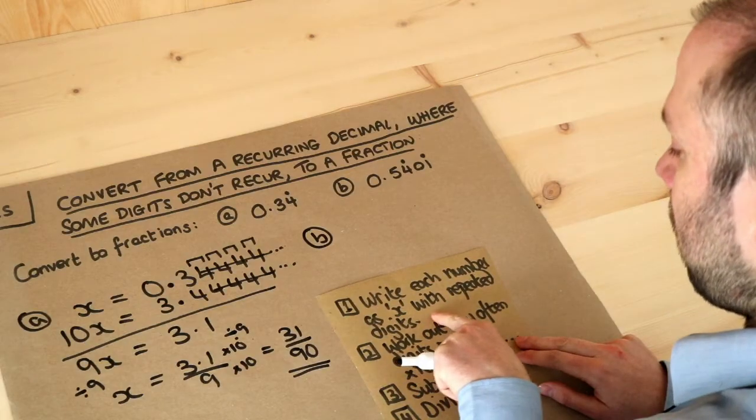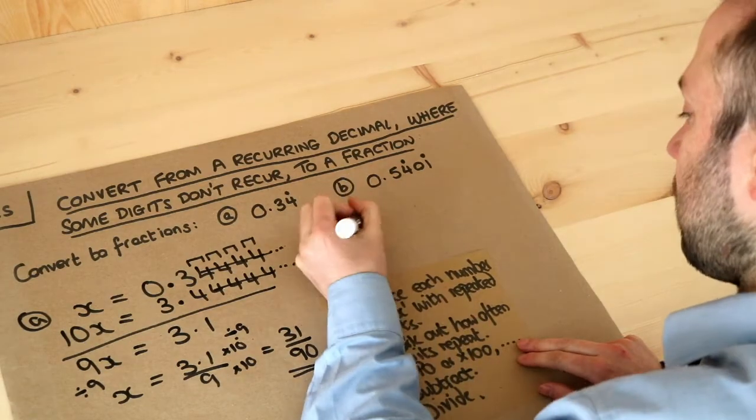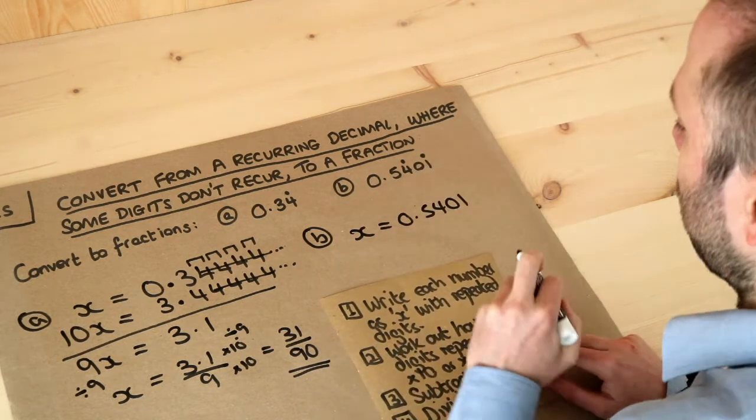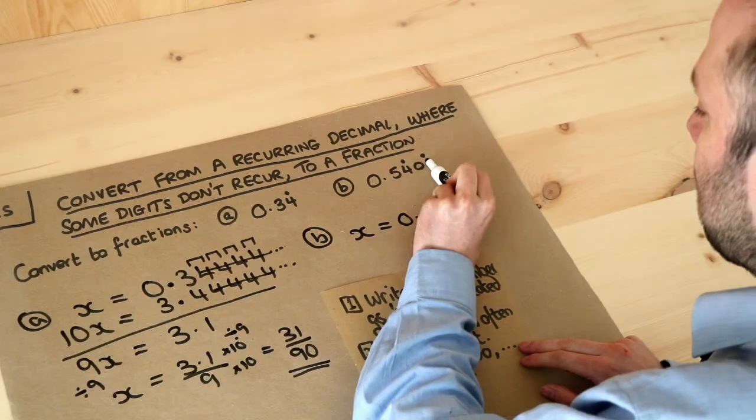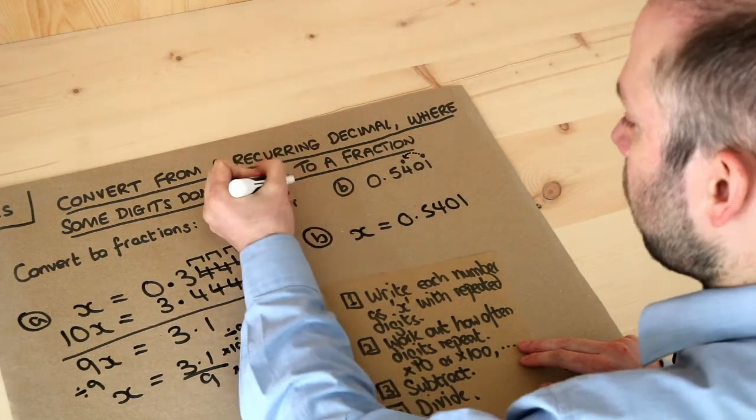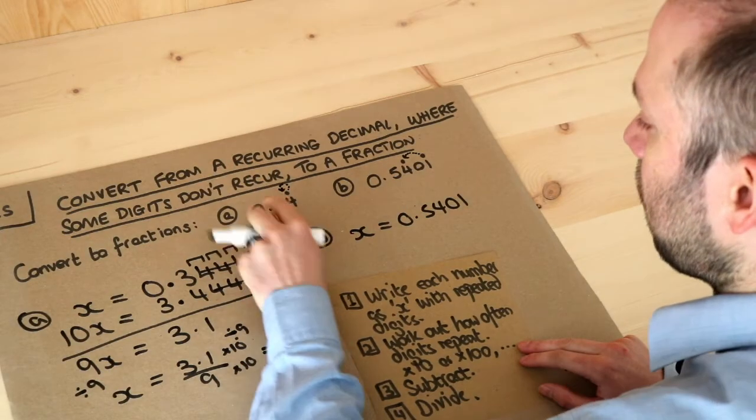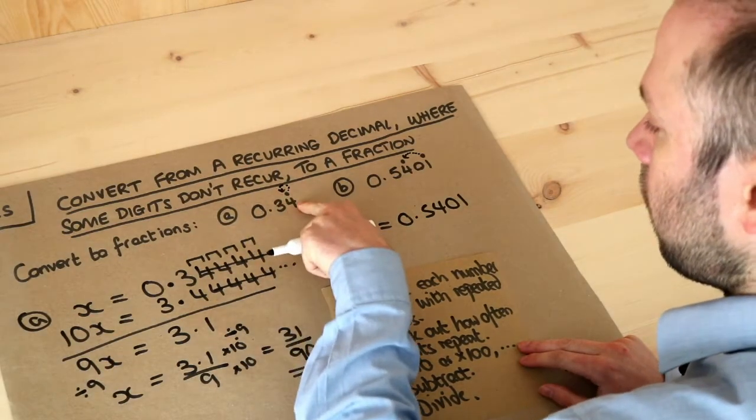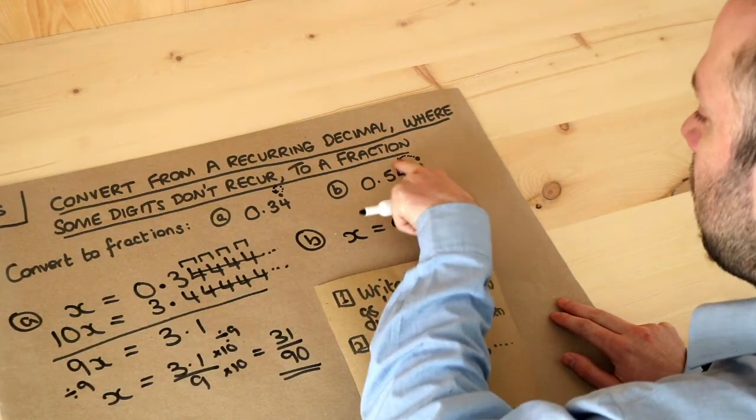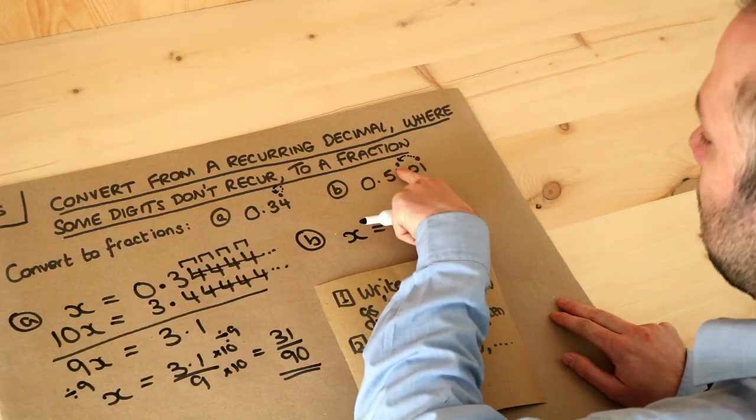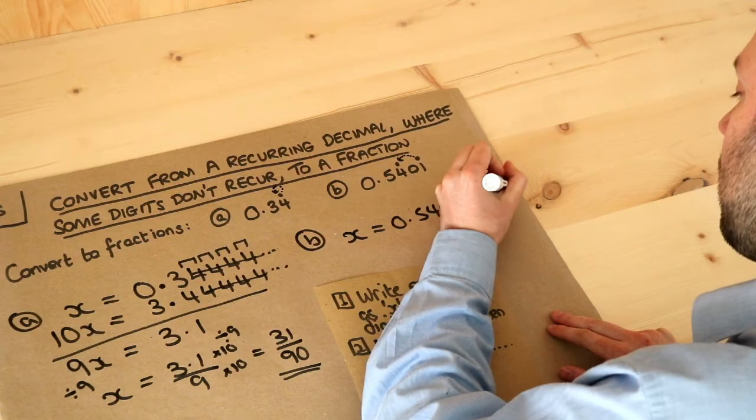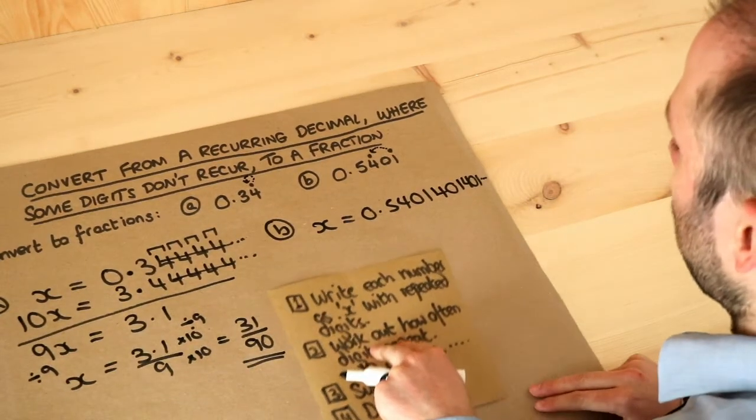So step one, write out each number with the repeated digits and as x. So x equals 0.5401. Now how does the repetition work? Well as soon as we get to that second dot we go back to the first dot. So it's 0.5401440144014401. We go back to the first dot each time we reach the second. So let's write out the 401 401 401 401 with the 401 repeating.